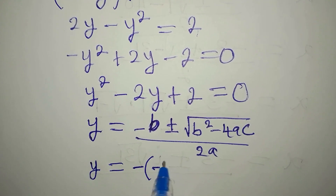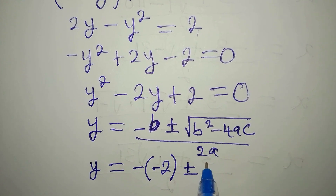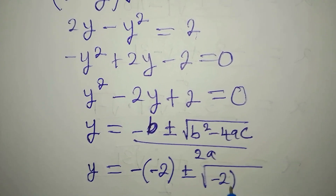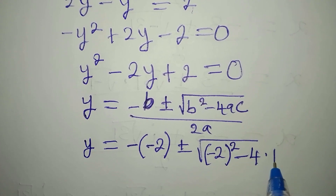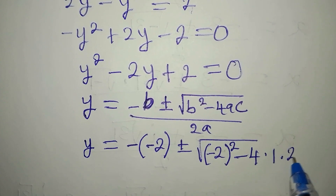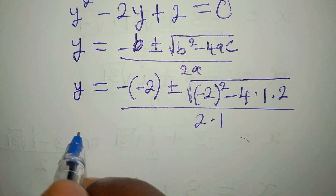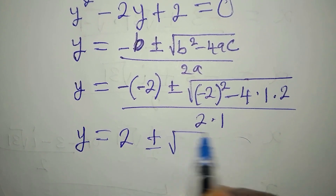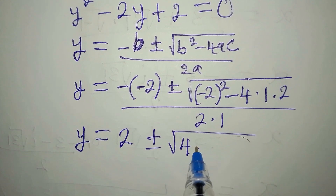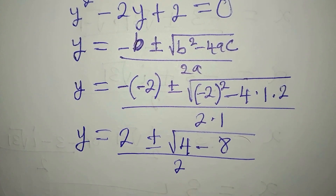So we write negative of negative 2, plus or minus square root of (negative 2) squared minus 4 times a times c. Our a is 1 and c is 2, so we have 4 times 1 times 2 equals 8, all divided by 2 times 1 which is 2. This gives y equals 2 plus or minus square root of 4 minus 8, which is square root of negative 4, divided by 2.